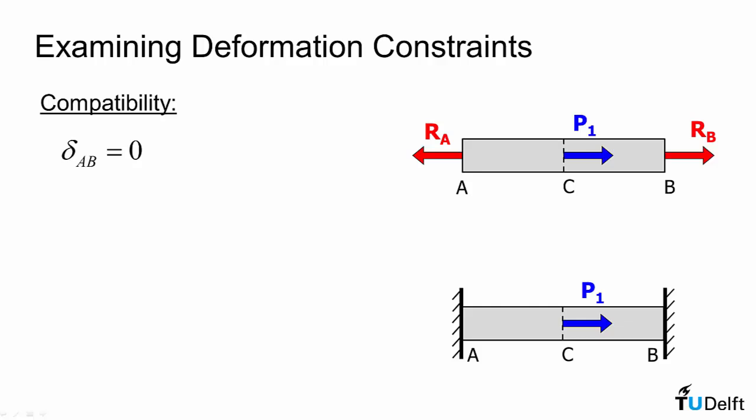Now we already determined a force displacement relationship for axial loaded members and that is delta is PL over EA. However this was only applicable if the force was constant along the entire length of the rod and in our case that is definitely not true.